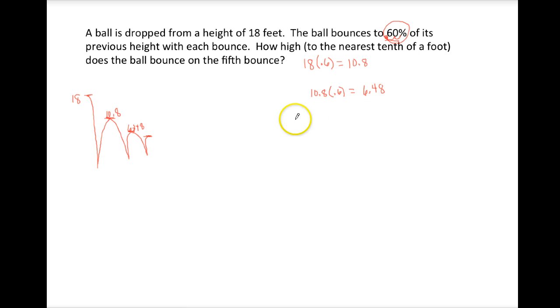What do we do next? The next bounce would be 60% of that number. So this is a geometric series because each time we're multiplying by another .6.